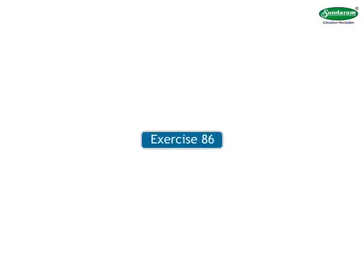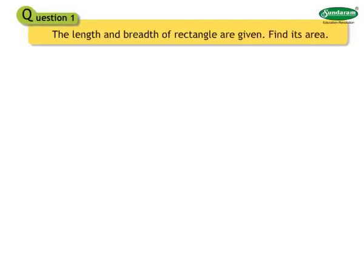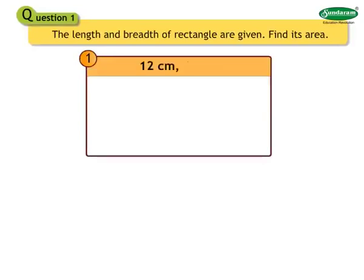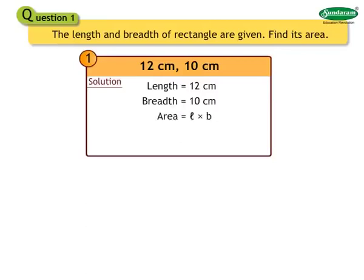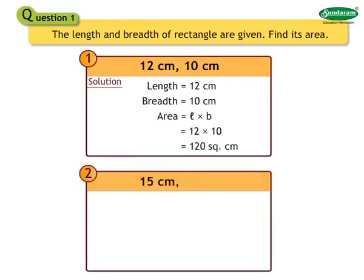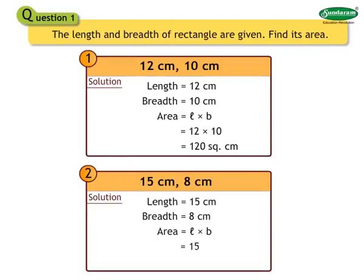Let us now solve Exercise 8.6. Question 1: The length and breadth of a rectangle are given. Find its area. Number 1: 12 cm and 10 cm. Solution: Area equals 12 into 10 equals 120 square centimeters. Number 2: 15 cm and 8 cm. Solution: Area equals 15 into 8 equals 120 square centimeters. Number 3: 12.5 meters and 10 meters. Solution: Area equals 12.5 into 10 equals 125 square meters.